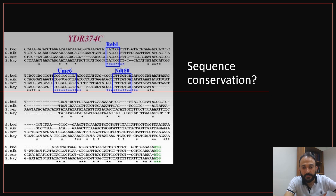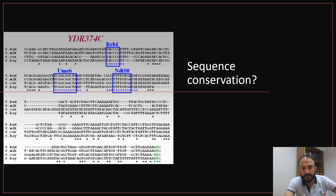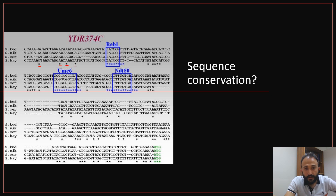For example, here you see there is a protein YDR374C on the left side, and this is compared between different species of Saccharomyces. This protein sequence is compared between these four species and you can find some sites which are conserved between all the species. However, there are some sites which are not conserved.